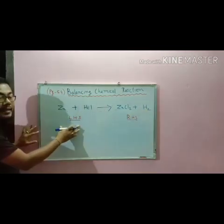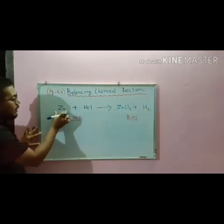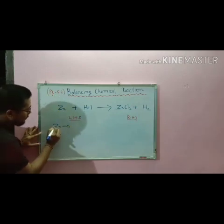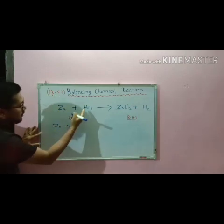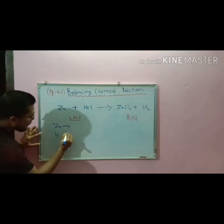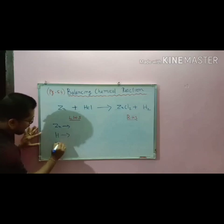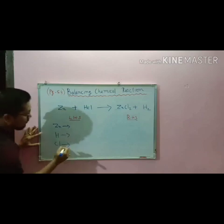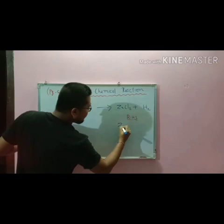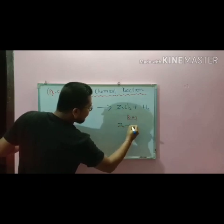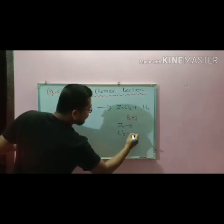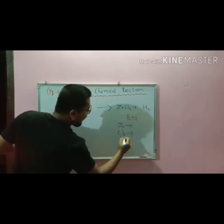Again, see the LHS part — Zn that is zinc, HCl: H that is hydrogen, Cl that is chlorine. On the RHS: Zn, Cl₂, and H₂.